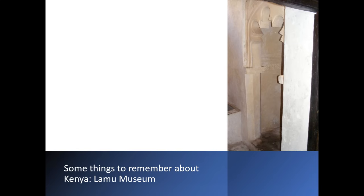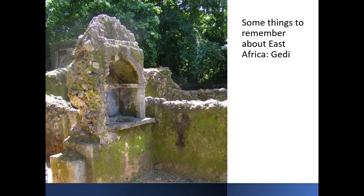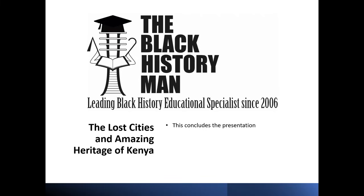Some things to remember about Kenya: in the Lamu Museum, which is a house that has been converted, there's a corner of a bath on one side, and what looks like a mihrab on the other side is actually a toilet. A plan of the House of the Kauris shows the bath and toilet right next to each other — Kirkman says 14th century, but it's probably 11th century. This is typical Swahili layout. And finally, something to remember East Africa by: a water fountain. The lost cities and amazing heritage of Kenya. Thank you very much.